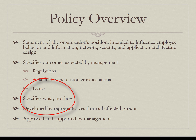Policies specify what should happen, not how. Standards, guidelines, procedures, and the controls that we implement — those all specify how. A policy might state that we must protect all restricted information with encryption when it passes across the internet. The standard might state that all restricted information passing over the internet must be encrypted with TLS. The policy states it has to be encrypted; the standard says how the encryption must happen.